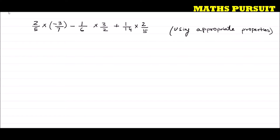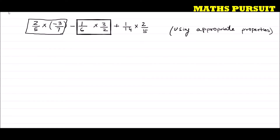If I split this above equation into parts, it would be very easy to understand. I consider 2/5 × (-3/7) as one part, then -1/6 as another part, and 1/14 × 2/5 as another part. We got three parts — let me name them A, B, and C, so that it would be very easy to understand.